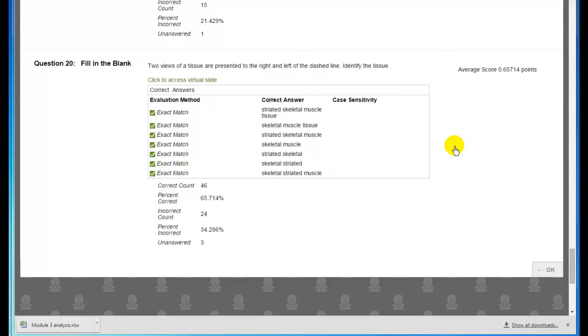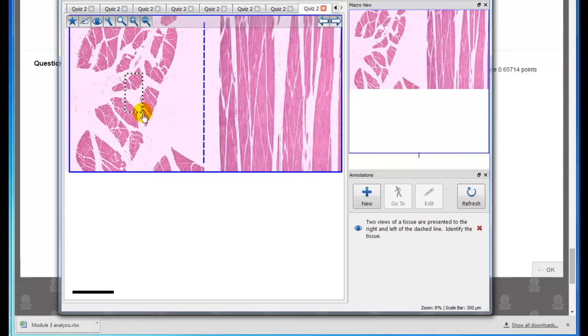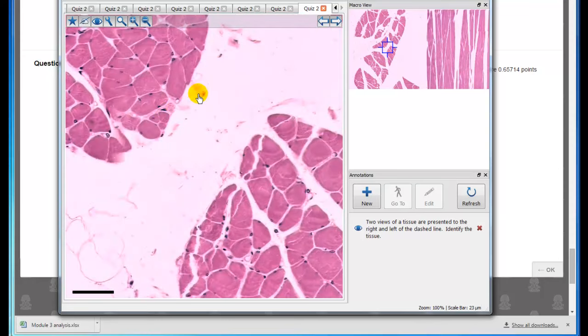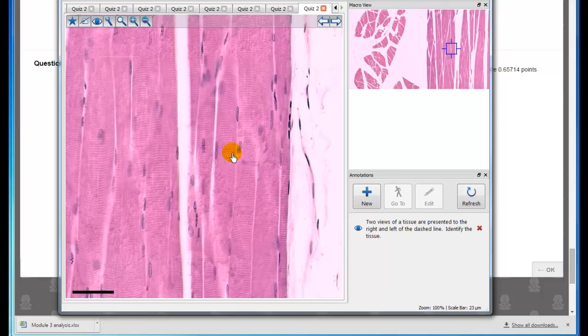Here's the last question in Module 2, Part B. Two views of the tissue are presented in right and left dashed lines. The correct answer was striated skeletal muscle. Here on the left is a cross section and on the right is a longitudinal. If we magnify the cross section, right away you can see that these cross sections, the nuclei are at the edge of the cell and they're very eosinophilic solid profile. So these remind one of skeletal muscle tissue. Now let's take a look at the longitudinal and immediately you see the striation. So clearly this is striated skeletal muscle tissue.